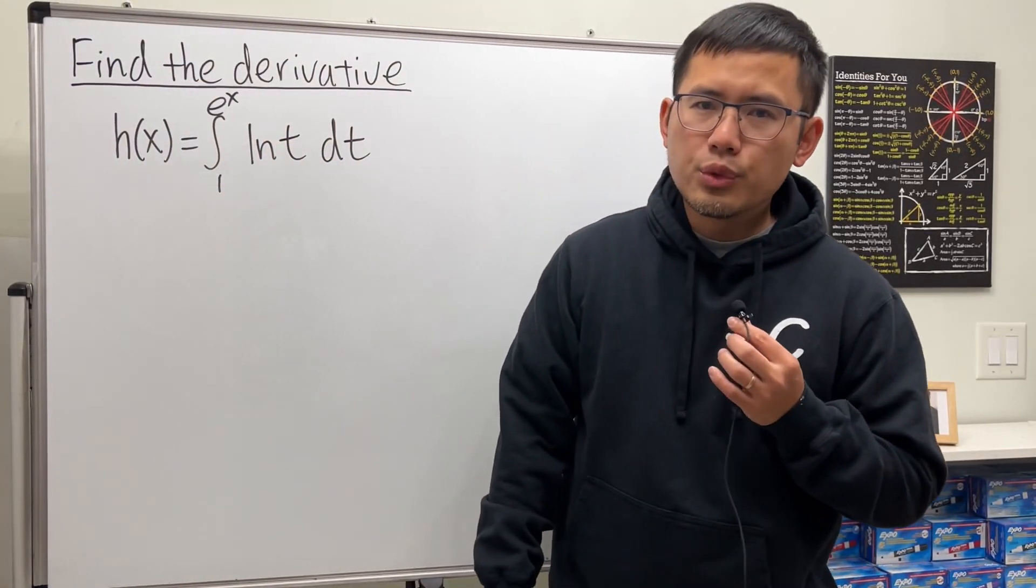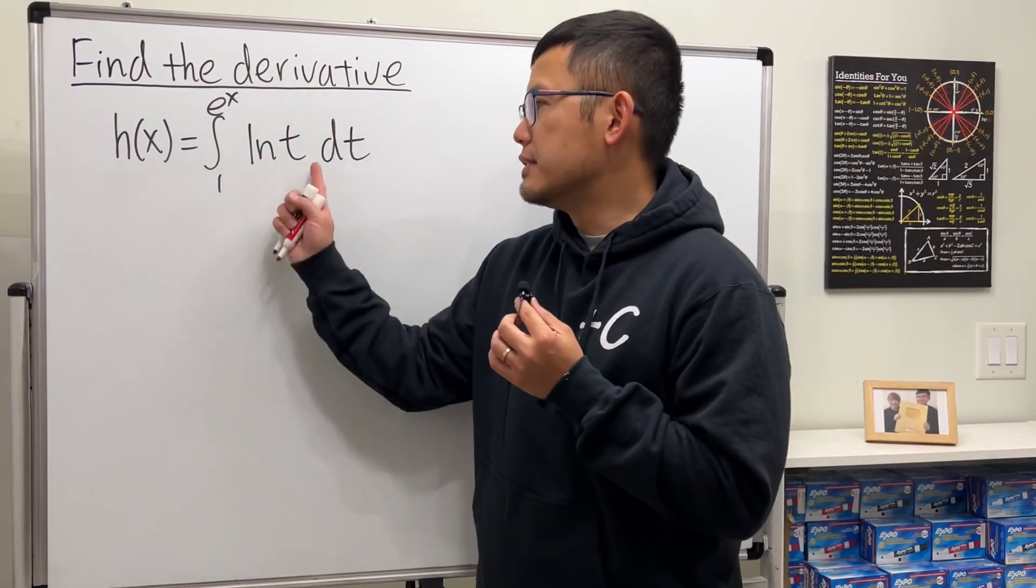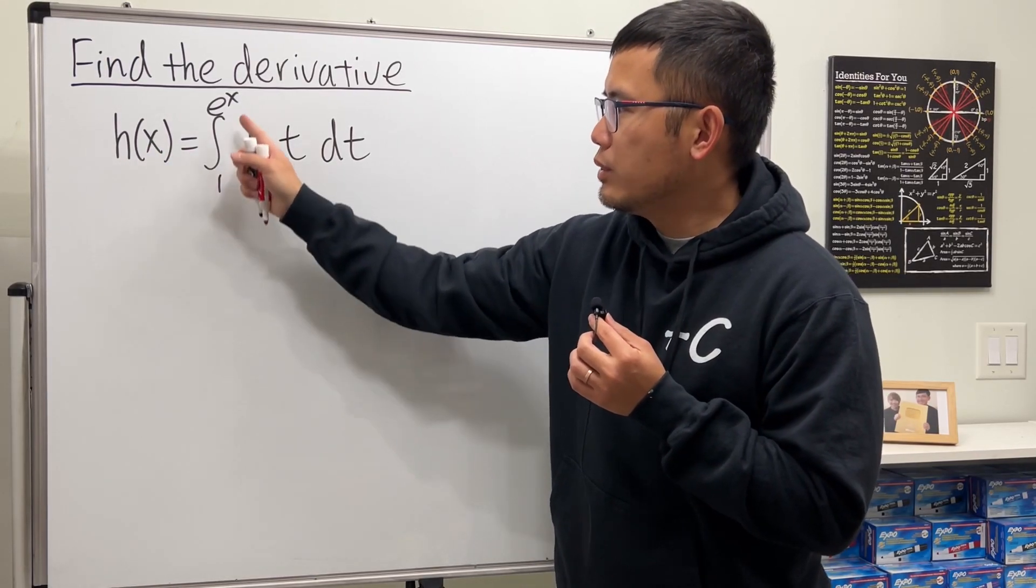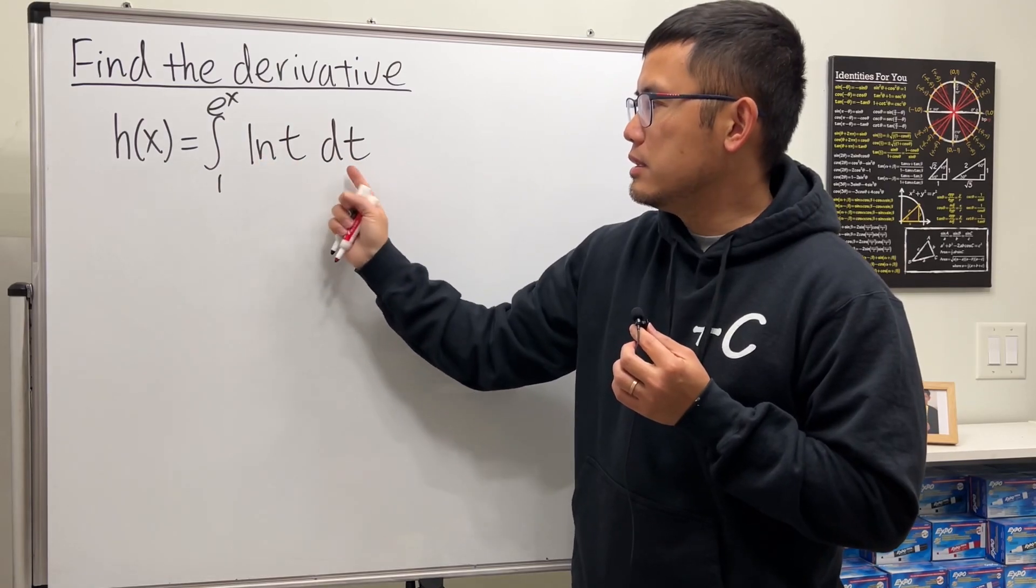In this calculus tutorial, I will show you how to find the derivative of this function. h of x equals the integral going from 1 to e to the x, and here we have ln t dt.